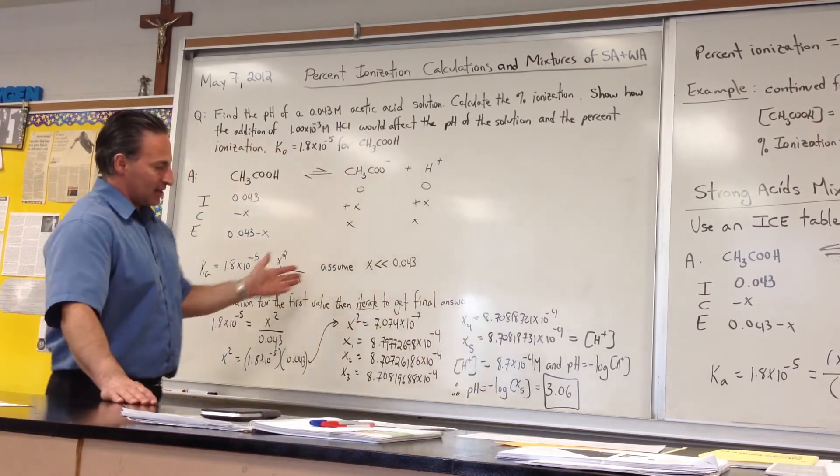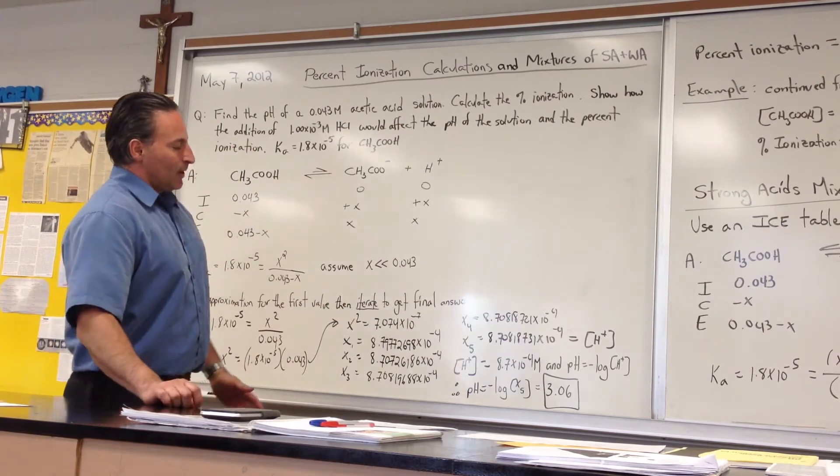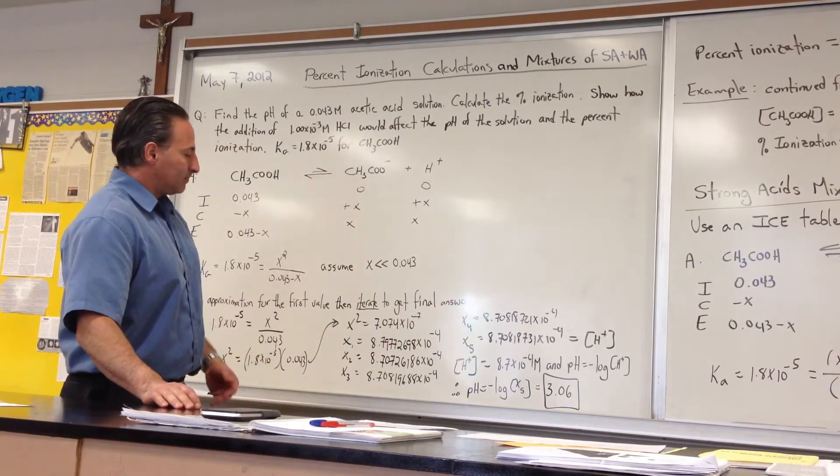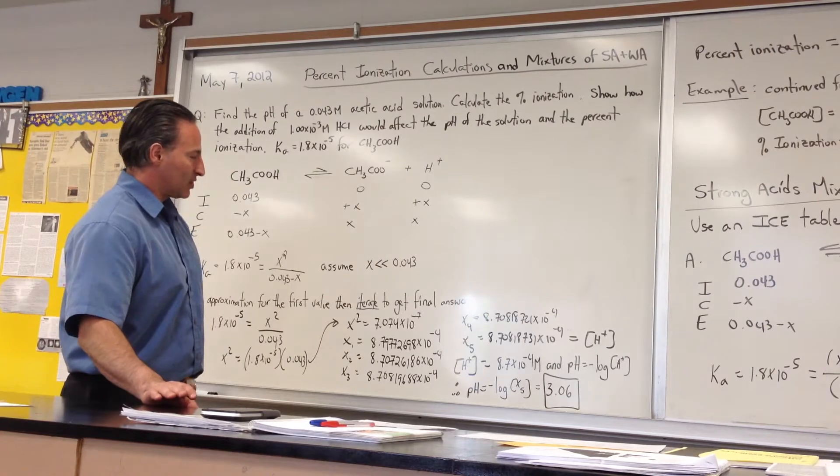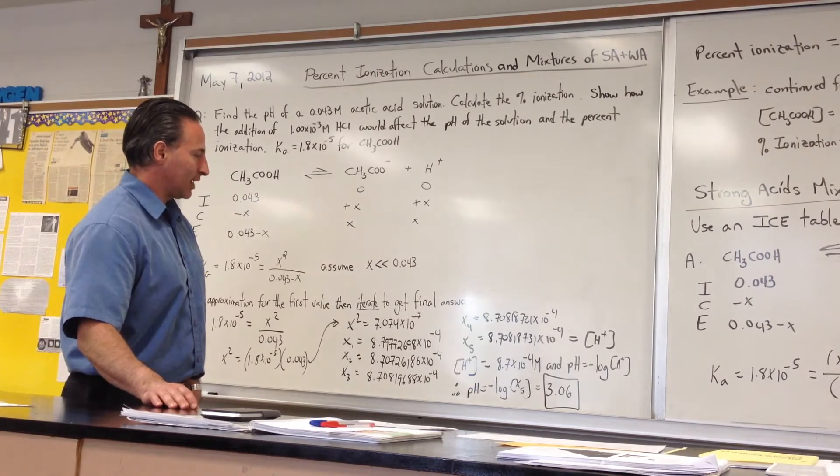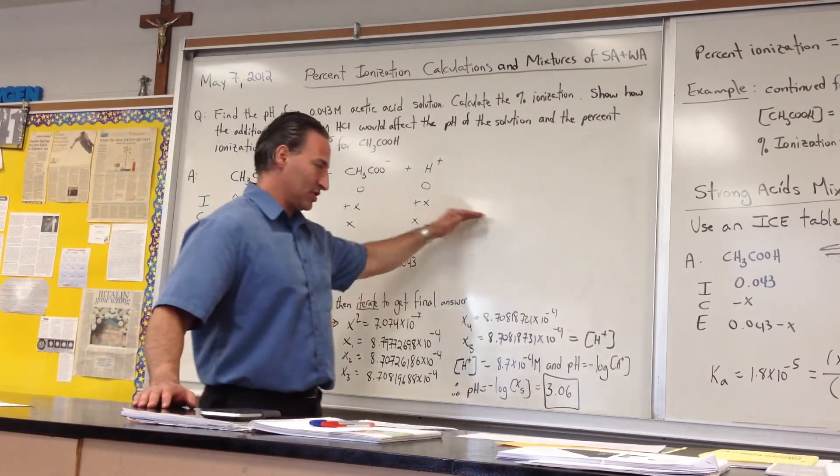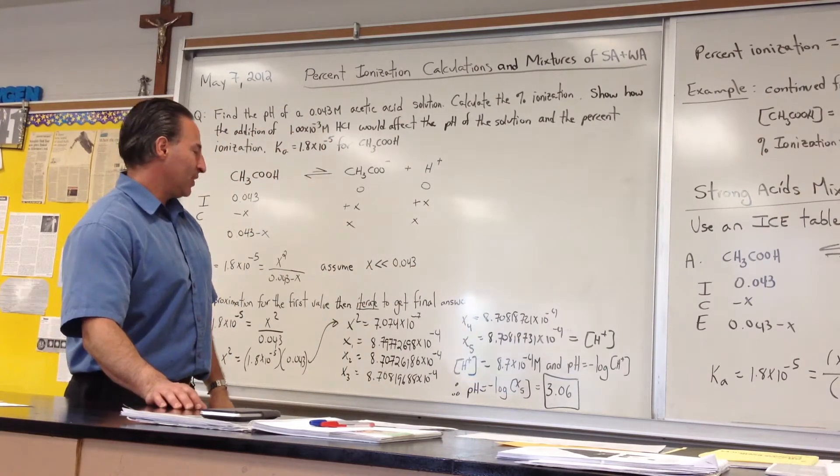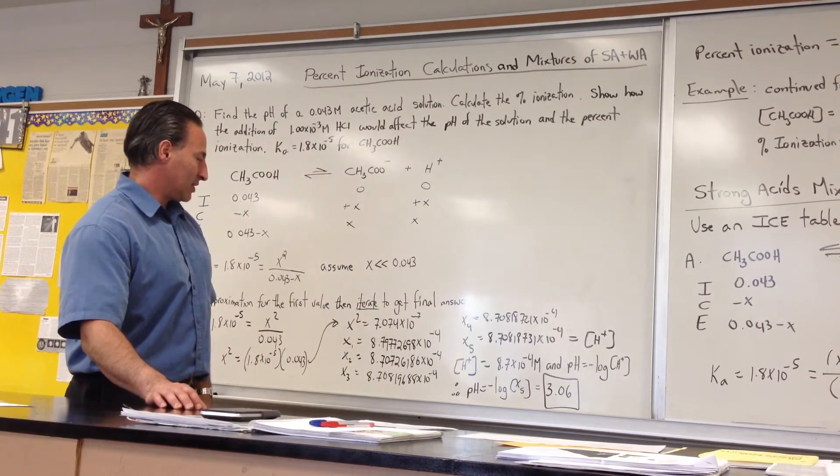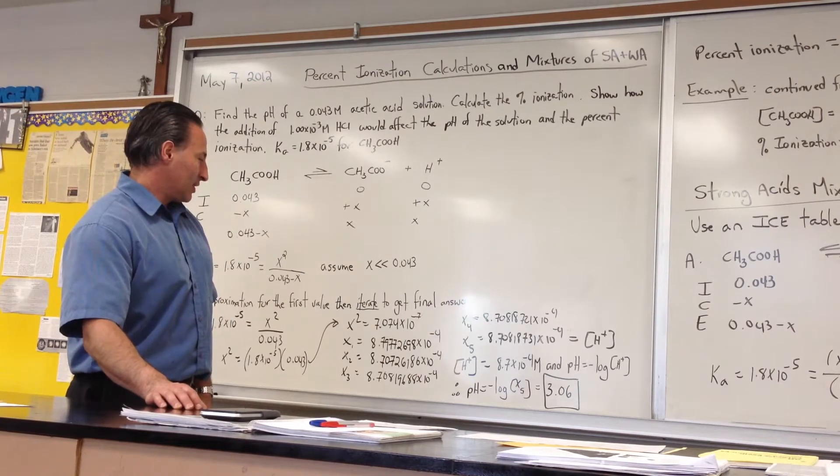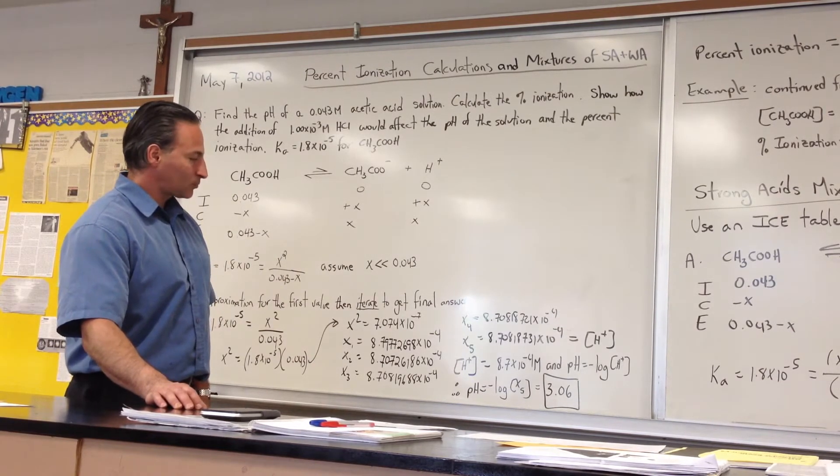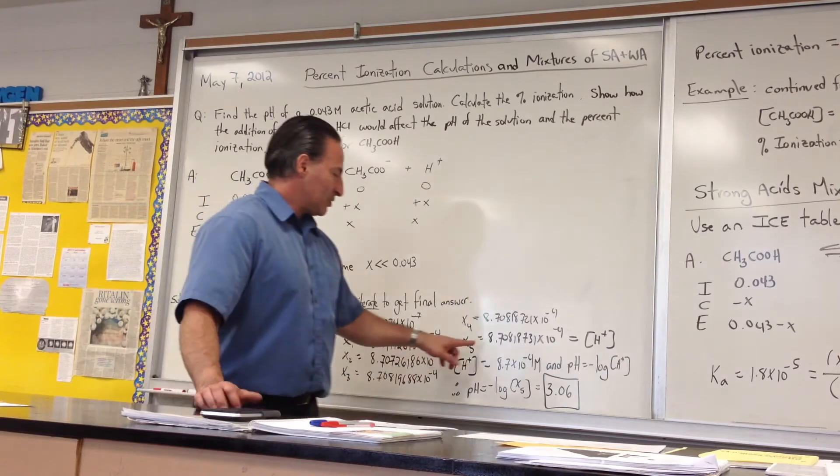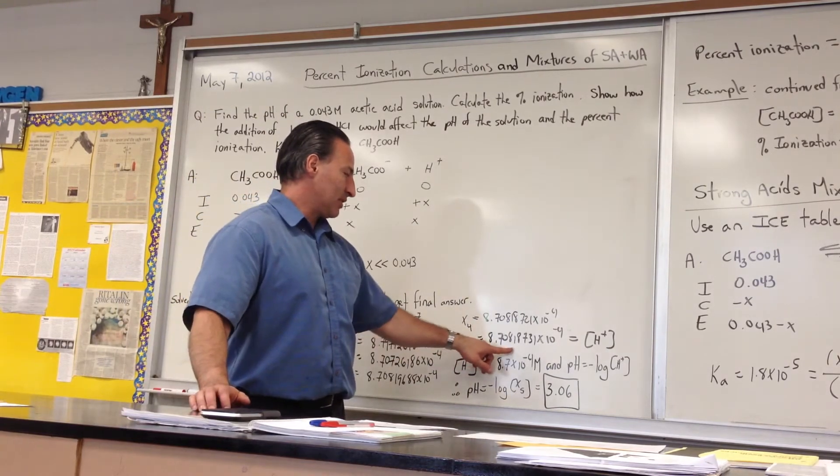It'll be identical to the number from the quadratic formula. The purpose of the iterative method is to avoid using the quadratic formula, which is rather cumbersome, although there are calculators that will do that. Nevertheless, I like the method myself. I find it's a time saver most of the time. So the final answer after five iterations is 8.708.